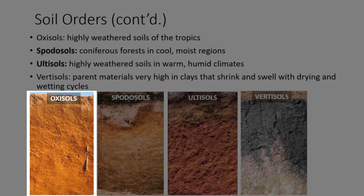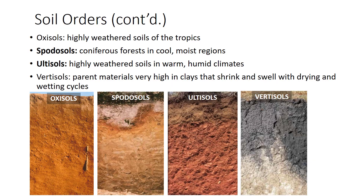Oxisols are highly weathered soils of the tropics. Ox means oxide. The A horizon is low in organic matter and the soil is largely comprised of granules of iron oxide clays that behave like sand. Oxisols are often red to yellow in color because of iron oxides.